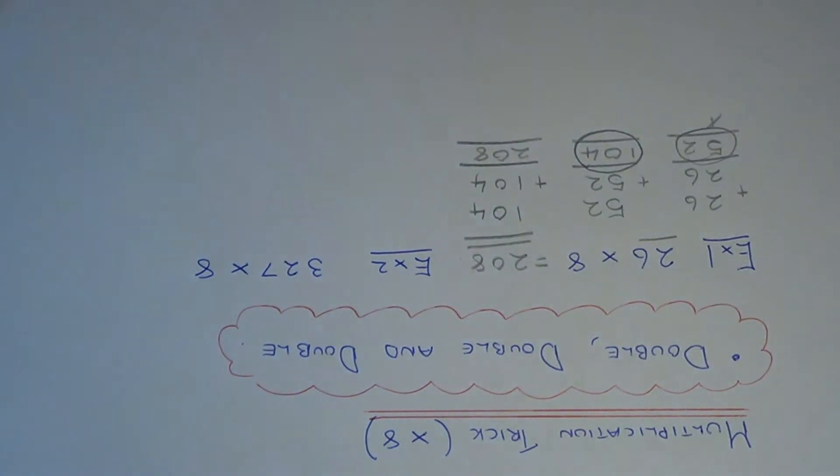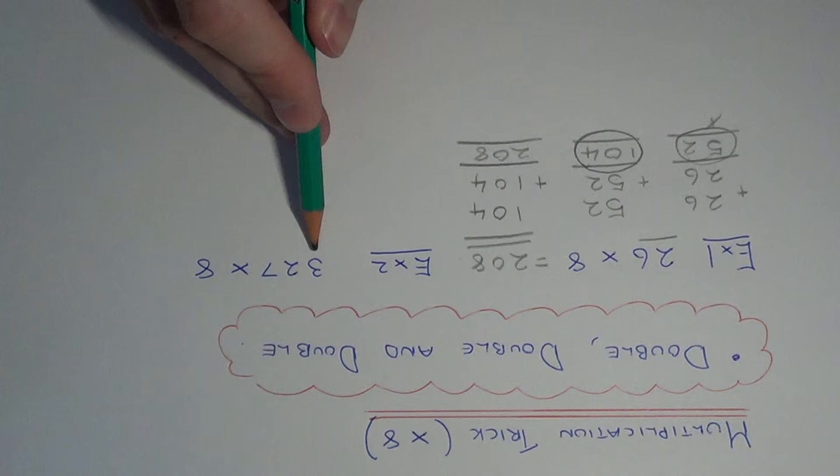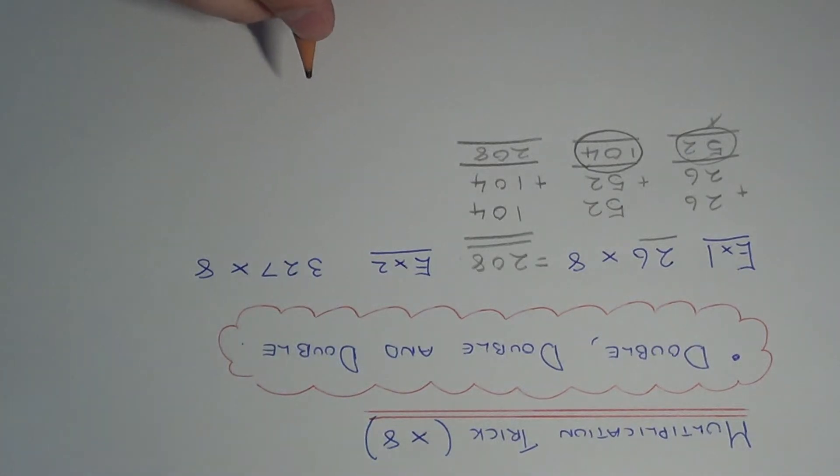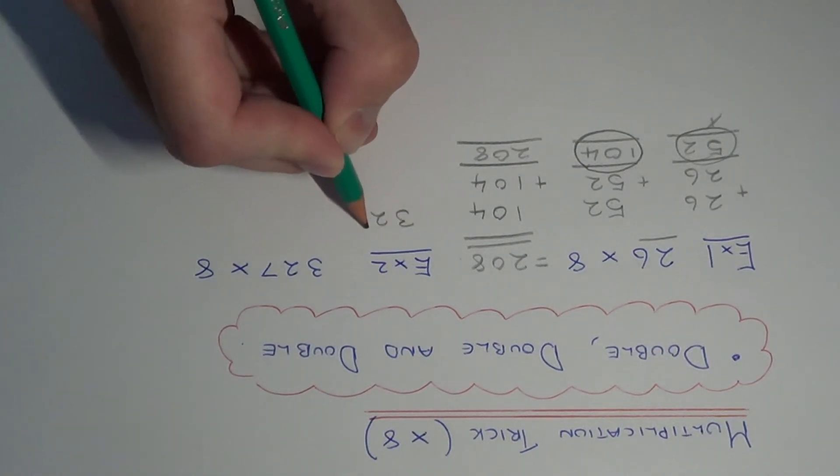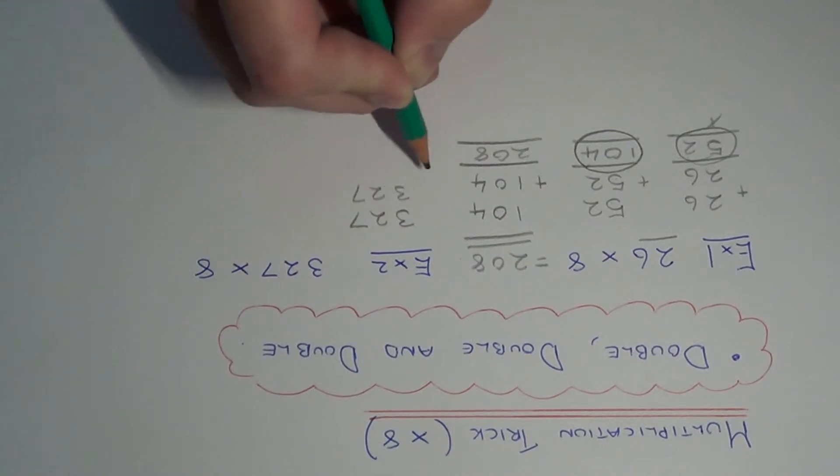Let's do one more example then. We've got to this time work out 327 multiplied by 8, so we just need to double 327 three times. Let's double 327 first of all.